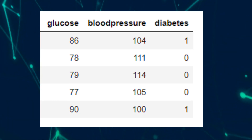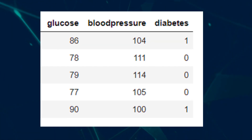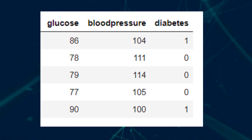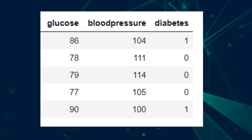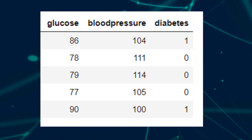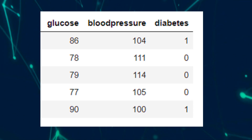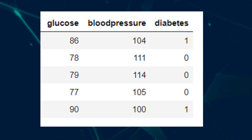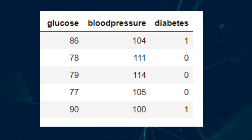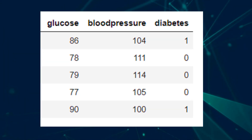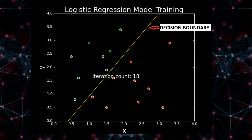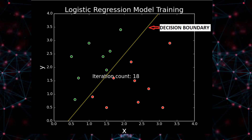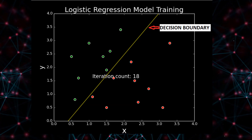In this tutorial we are going to predict the likelihood of diabetes in a patient using blood pressure and glucose levels. The independent variables or features are glucose level and blood pressure, and the dependent variable or label is diabetes — a value of 1 indicates diabetes and 0 indicates no diabetes. A snapshot of the sample data is shown on screen with the top 5 rows displaying glucose, blood pressure, and diabetes columns.